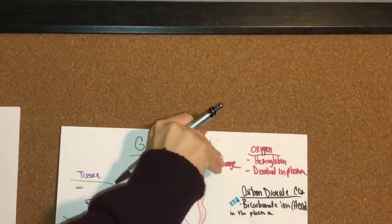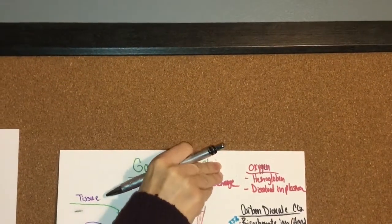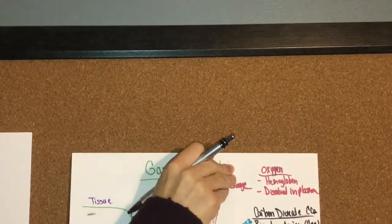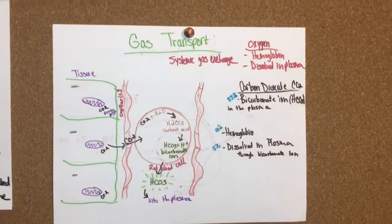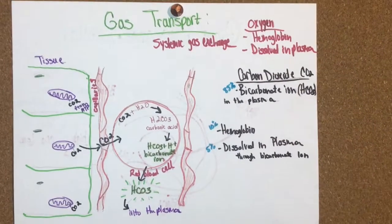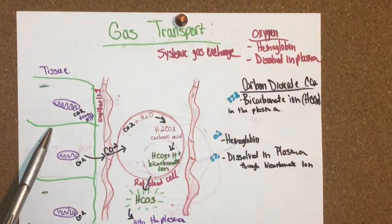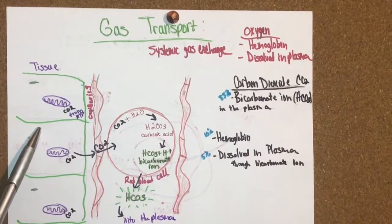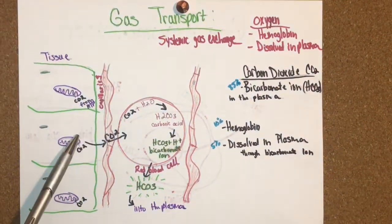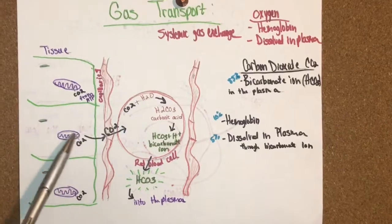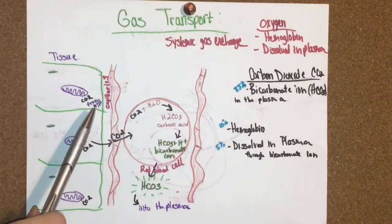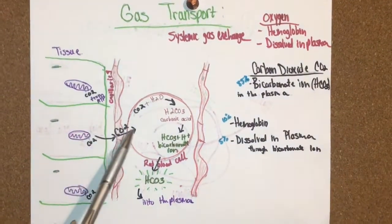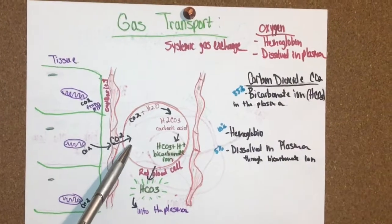This is gas transport and this shows more of the systemic gas exchange, the gas exchange that happens throughout the body. The tissue is oxygen deficient because it burns the oxygen for fuel. That's where you see diffusion occurring again, when oxygen goes from the blood to the tissue. Then the tissue has a higher concentration of carbon dioxide levels, so the carbon dioxide diffuses into the blood where there's lower carbon dioxide levels.